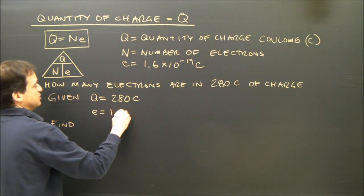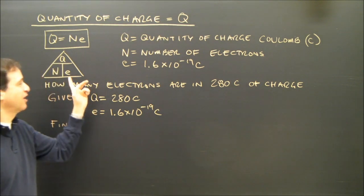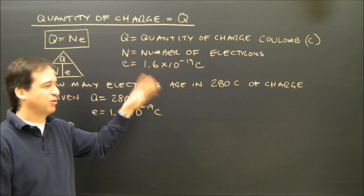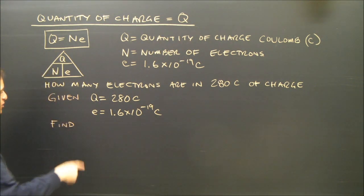It's 1.6 times 10 to the negative 19 coulombs. Now you may not actually even be doing this formula as one of the ones in your course. So if not, you can move on to the next video. But if you do, here's how you do it.